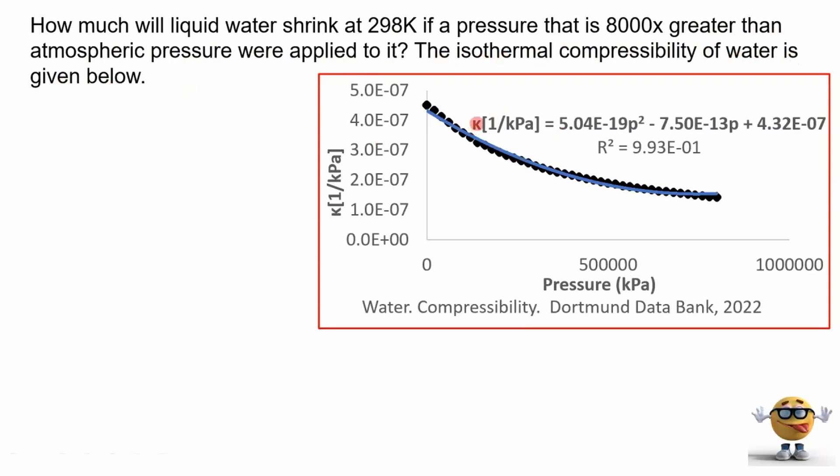So kappa is the isothermal compressibility. And it's not a number. In this case, it's an equation because the isothermal compressibility really changes based on the pressure. And it does change. This is real data on water, 298 Kelvin. So you plug in a different pressure, kappa is going to be different.